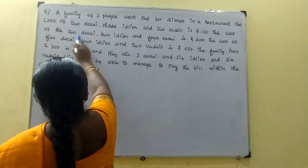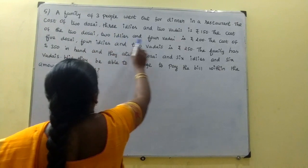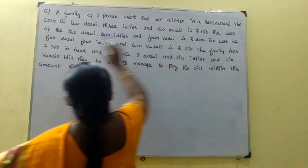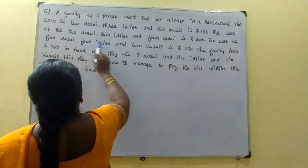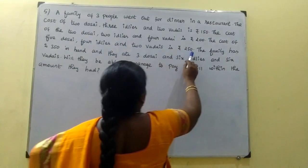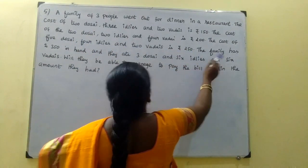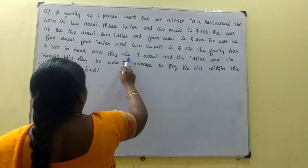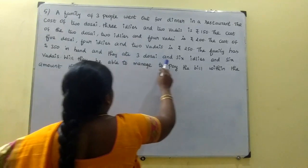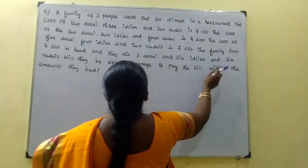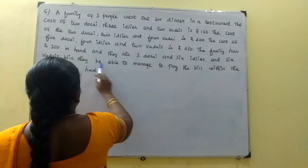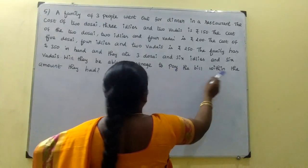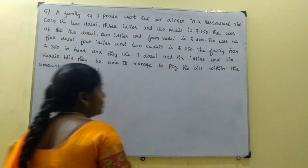The cost of 2 dosas, 2 idlis and 4 vadas is Rs. 200. The cost of 5 dosas, 4 idlis and 2 vadas is Rs. 250. The family has Rs. 350 in hand and they ate 3 dosas, 6 idlis and 6 vadas. We need to check if they are able to manage to pay the bill within the amount they had.